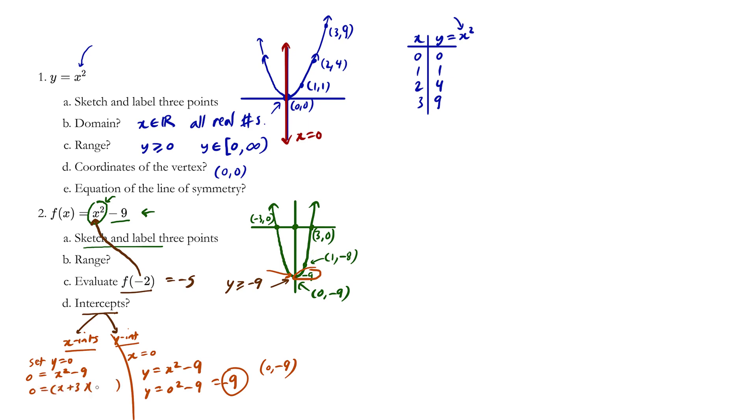Difference of squares. Something times something is 0. What could x be?